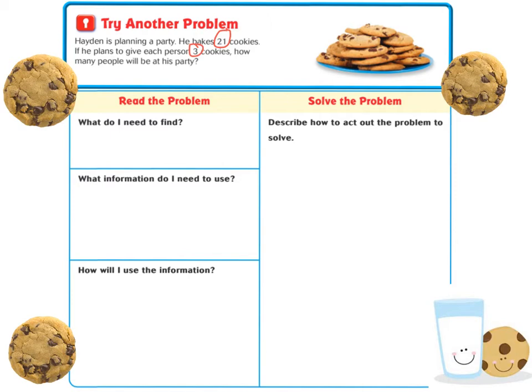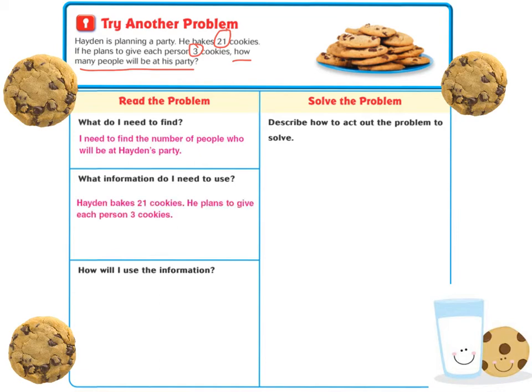What do I need to find? I need to find the number of people who will be at Hayden's party. I need to know that Hayden bakes 21 cookies and that he plans to give each person three cookies. I will act out the problem by making equal groups with counters.